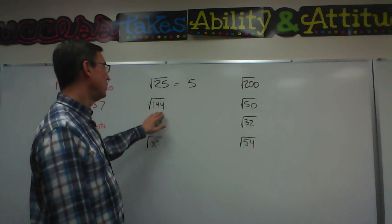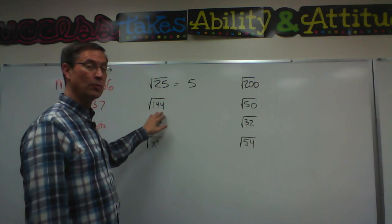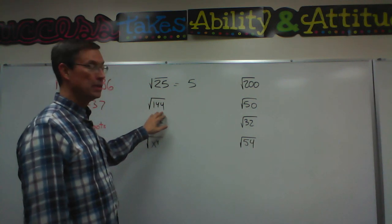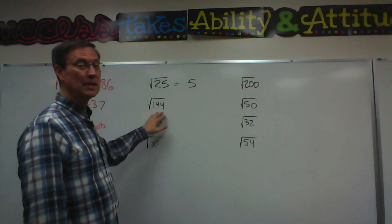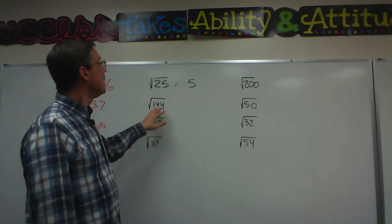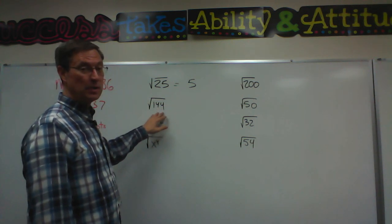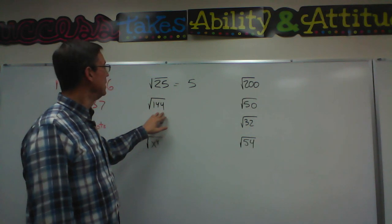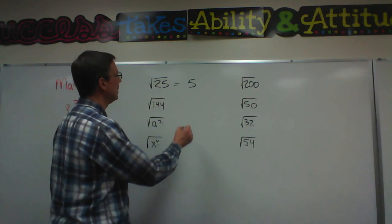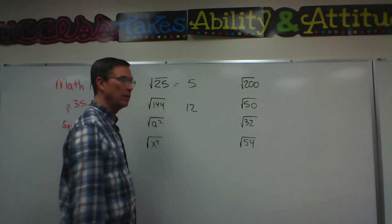Do you know what number times itself equals 144? If you are thinking of the number 11 you're wrong. It is more than that because 11 times 11 is 121. Let's try 12. 12 times 12, yes, is the square root of 144.